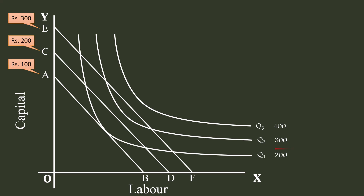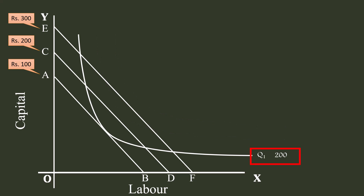The producer decides to produce 200 units of output. This makes all other isoquant curves redundant for our discussion. He has one isoquant curve Q1 and isocost curves A-B, C-D, and E-F, representing costs of 100 rupees, 200 rupees, and 300 rupees respectively.